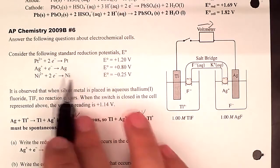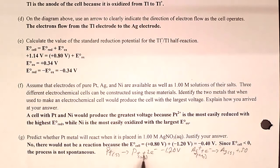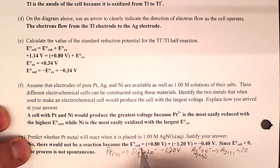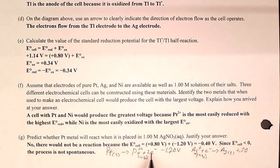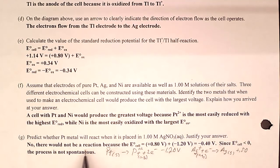For part g, if platinum metal reacts with aqueous silver cation: platinum goes from solid to Pt²⁺ (oxidation, two electrons out), and silver⁺ cation goes to solid silver (reduction). The platinum oxidation potential has its sign reversed (now negative), and silver's reduction potential is +0.80 V. Adding them gives a negative overall voltage — this reaction is not spontaneous. Nature doesn't favor it, and nothing will happen in real life.